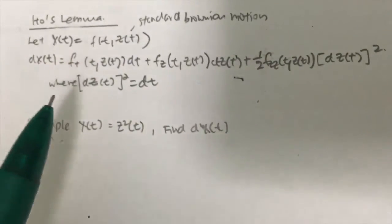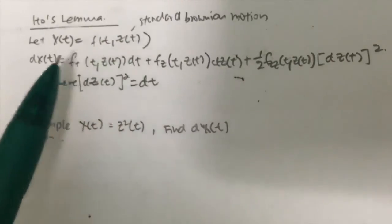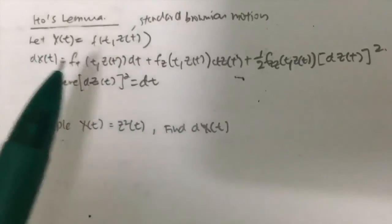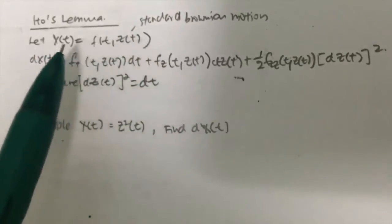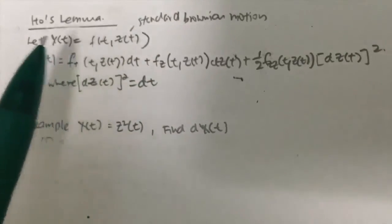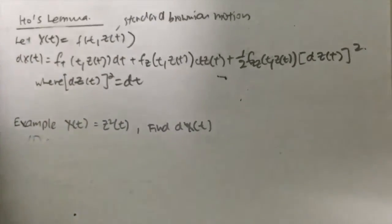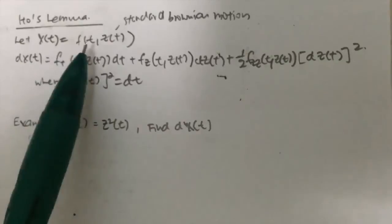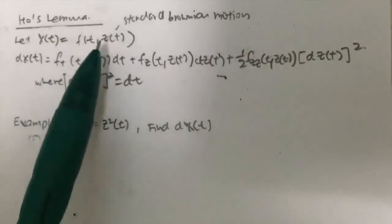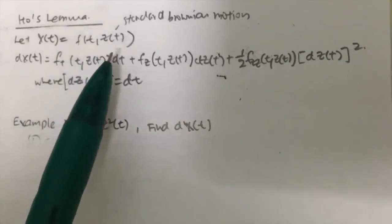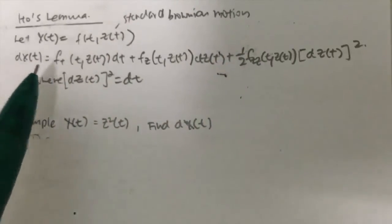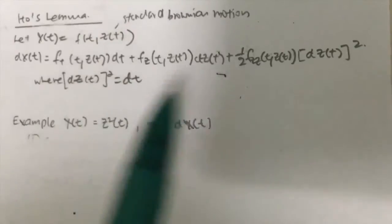Usually, when we face this kind of situation whereby we need to find our differential equation of X, we will use Ito's Lemma. So let X(t) be a function in terms of t and Z(t), where Z(t) follows a standard Brownian motion. Our stochastic differential equation will be something like this, where your dZ(t) squared is equal to your dt.